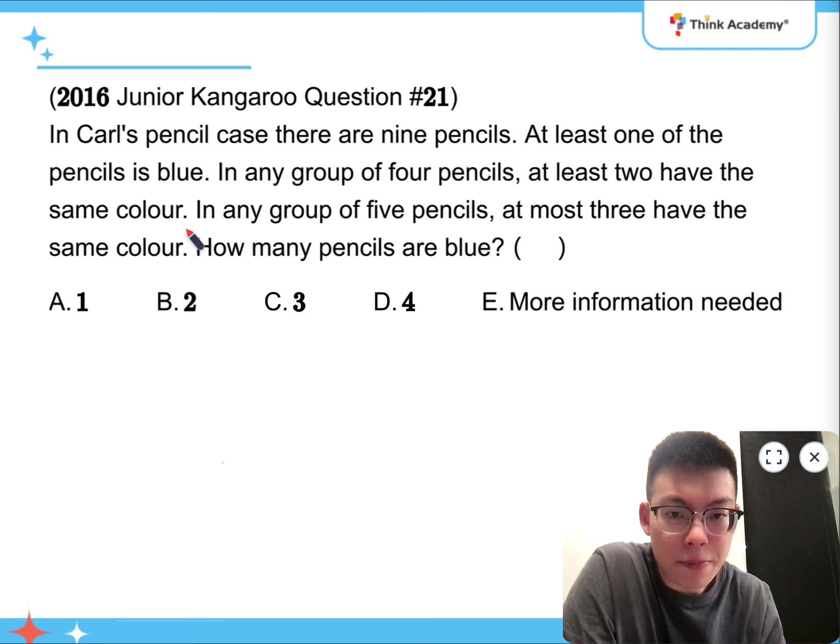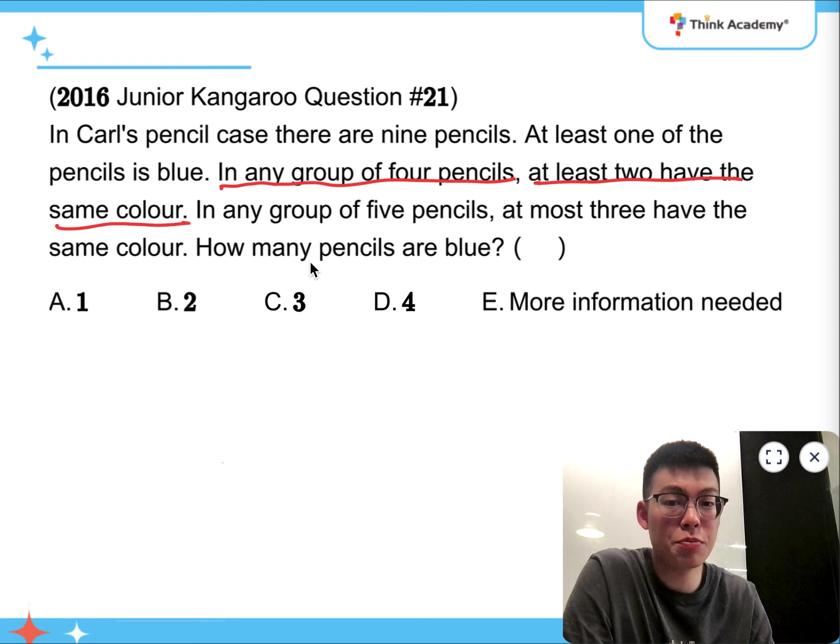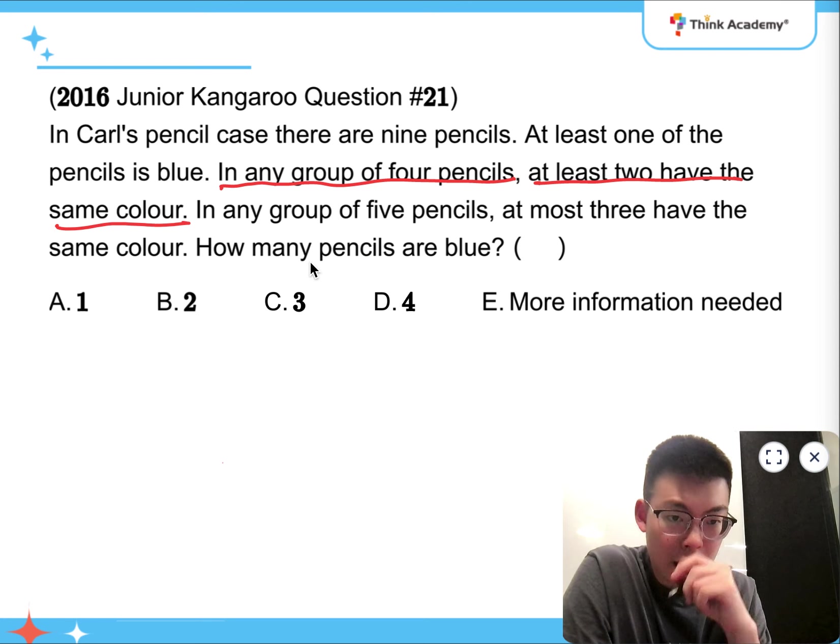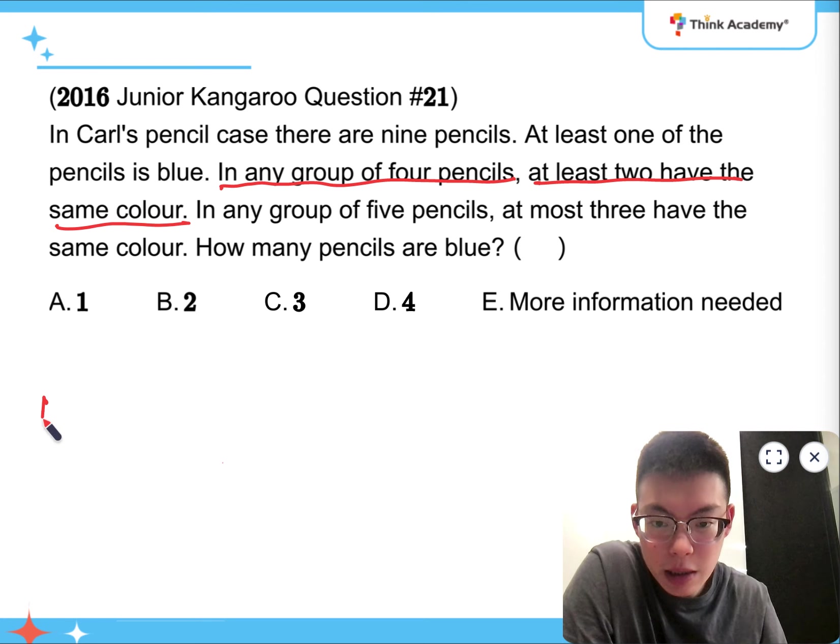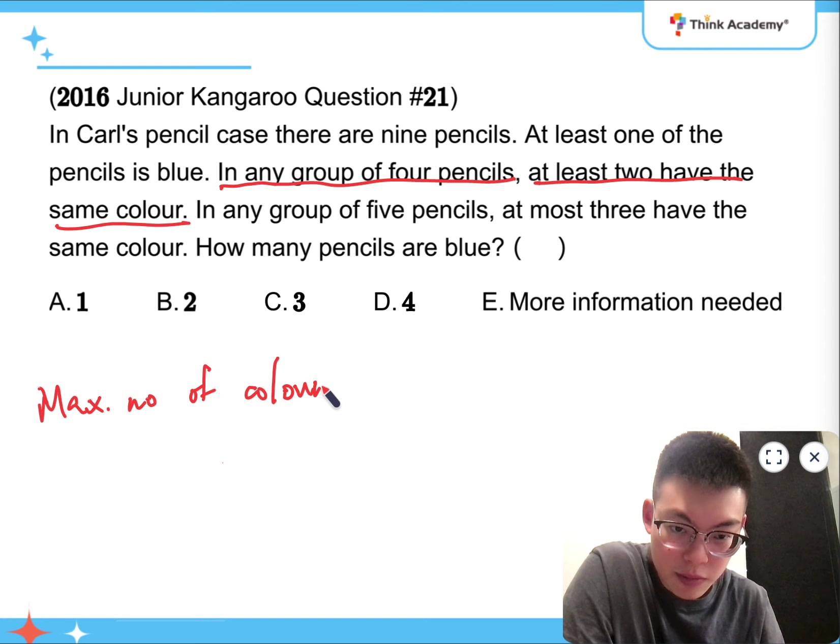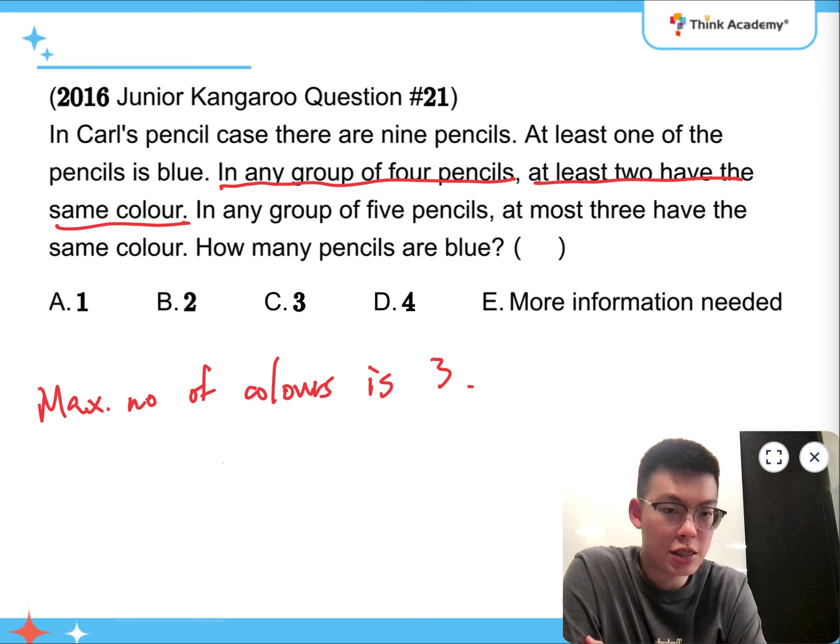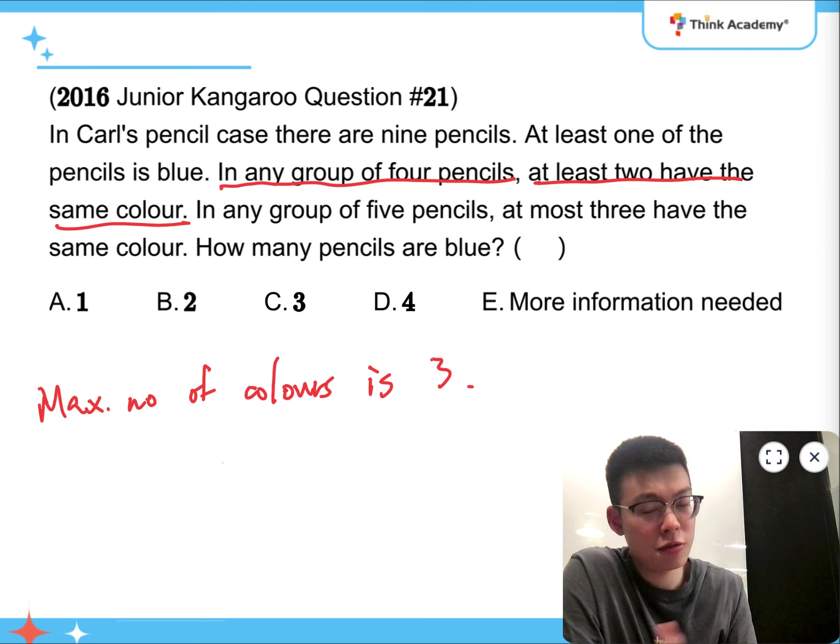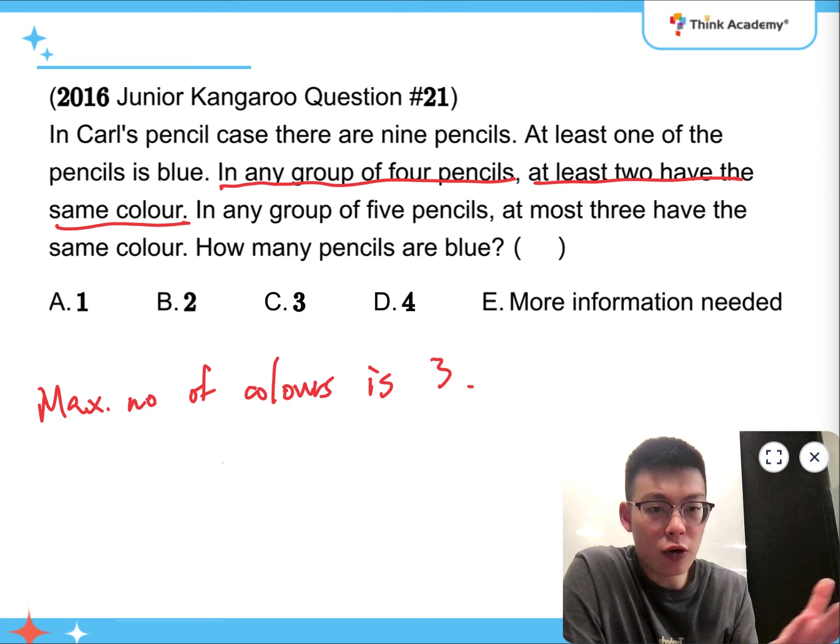So what does it mean? It means that the first statement tells us that if in any groups of 4 pencils, at least 2 have the same color, it means that there can't be 4 different colors. Which means that the maximum number of colors is 3. Because if there are 4 colors, then the 4 of them can't be guaranteed to have the same color with at least 2 of them, right?